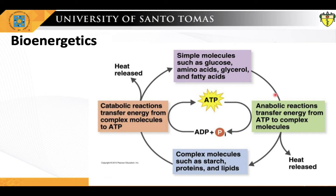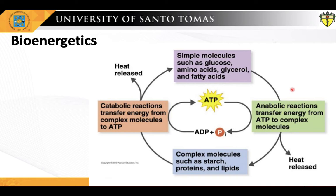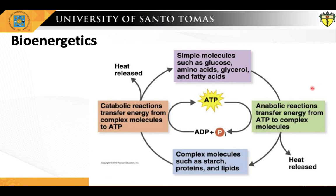Cells and organisms must perform work to stay alive, to grow, and to reproduce. The ability to harness energy and to channel it into biological work is a fundamental property of all living organisms. Modern organisms carry out a remarkable variety of energy transductions, conversions of one form of energy to another. They use chemical energy in fuels to bring about the synthesis of complex, highly ordered macromolecules from simple precursors. They also convert the chemical energy of fuels into concentration gradients, electrical gradients, motion, and heat. This exchange of energy is mediated by the universal energy currency, the adenosine triphosphate or ATP. Thus, bioenergetics is involved in the usage of energy in anabolic and catabolic processes. Without energy, all metabolic processes stop and life ends.